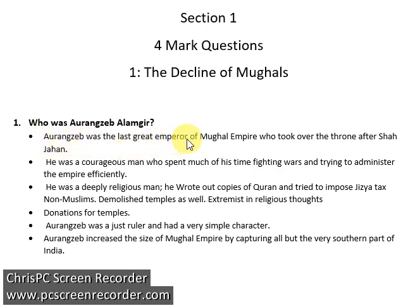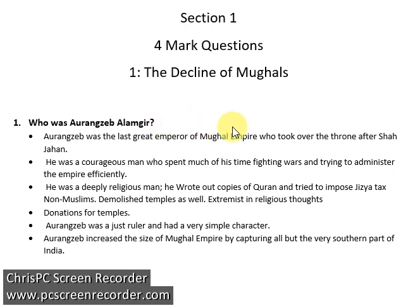For example: Aurangzeb was the last great emperor of the Mughal Empire. We call him the last great emperor because it is said that Aurangzeb Alamgir was the last Mughal ruler to bring advancement and development to the empire. After him, his successors were really very weak and couldn't do much for the empire — that is why we call him the last great emperor.